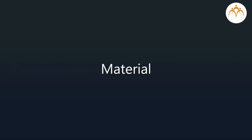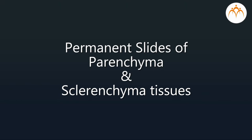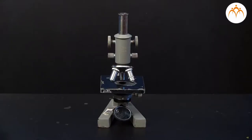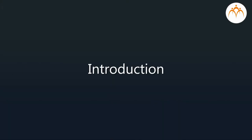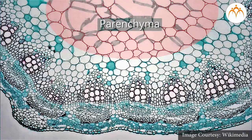The aim is to identify parenchyma and sclerenchyma tissues in plants from permanent slides and draw neat labeled diagrams. Materials required include permanent slides of parenchyma and sclerenchyma tissues and compound microscopes. Through this practical, students will be studying two types of simple permanent tissues from plants — these tissues are made up of one type of cells. We will briefly revise types of plant tissues through a chart.